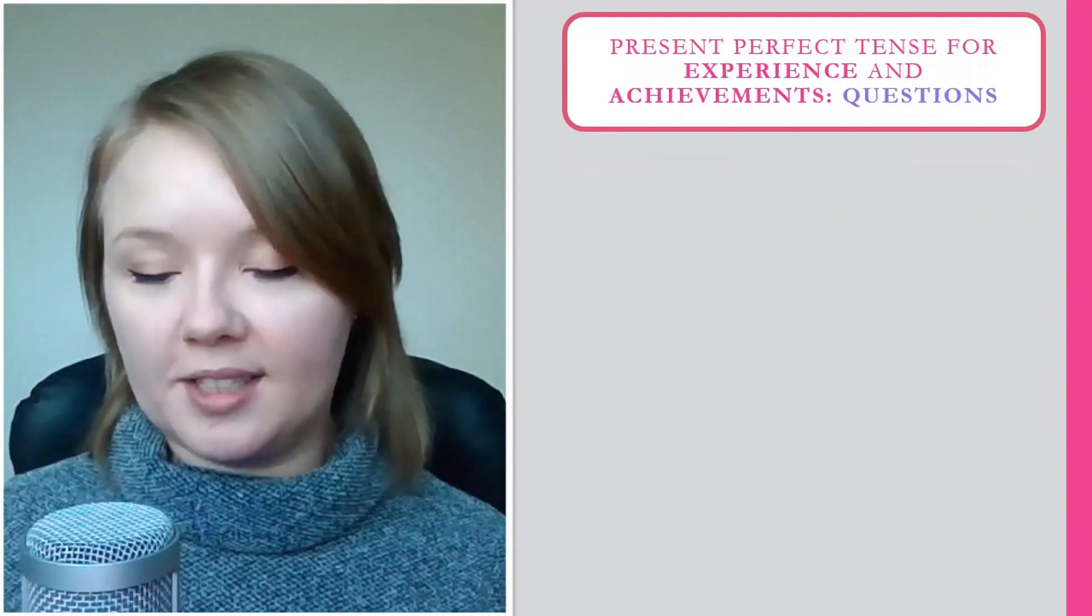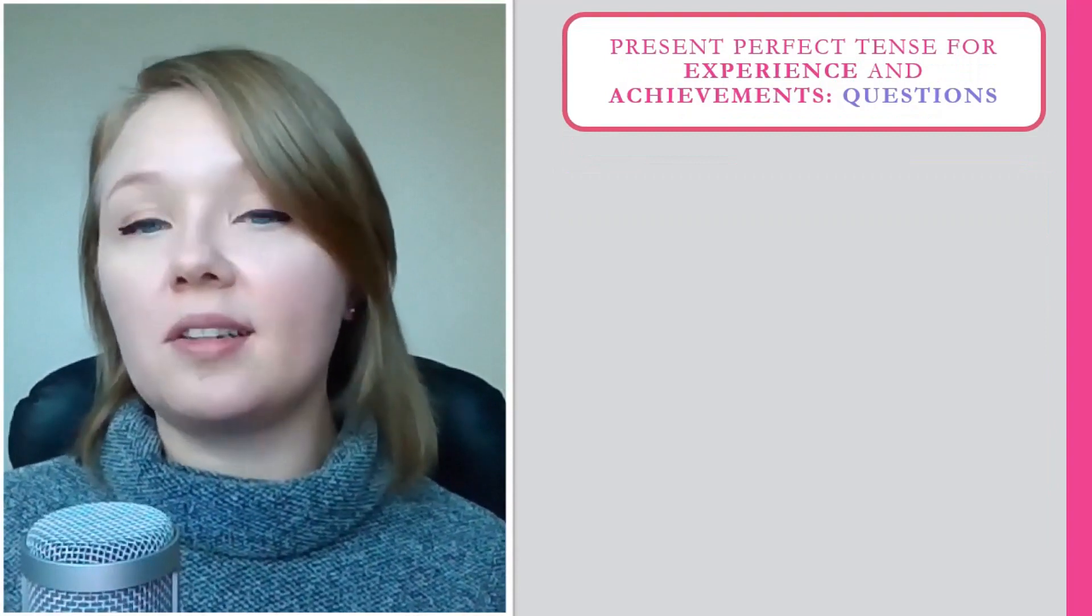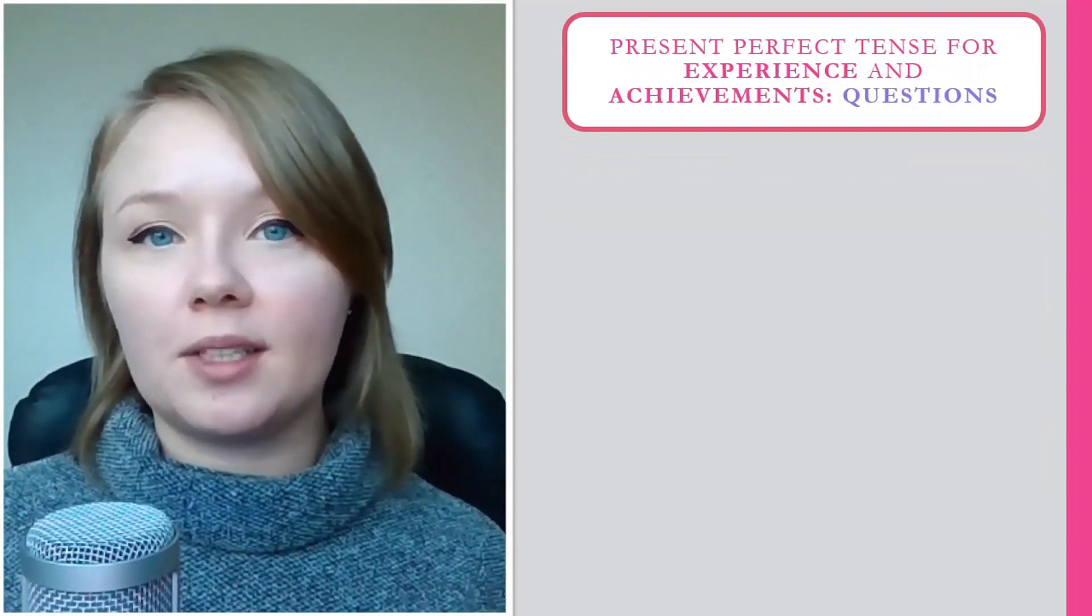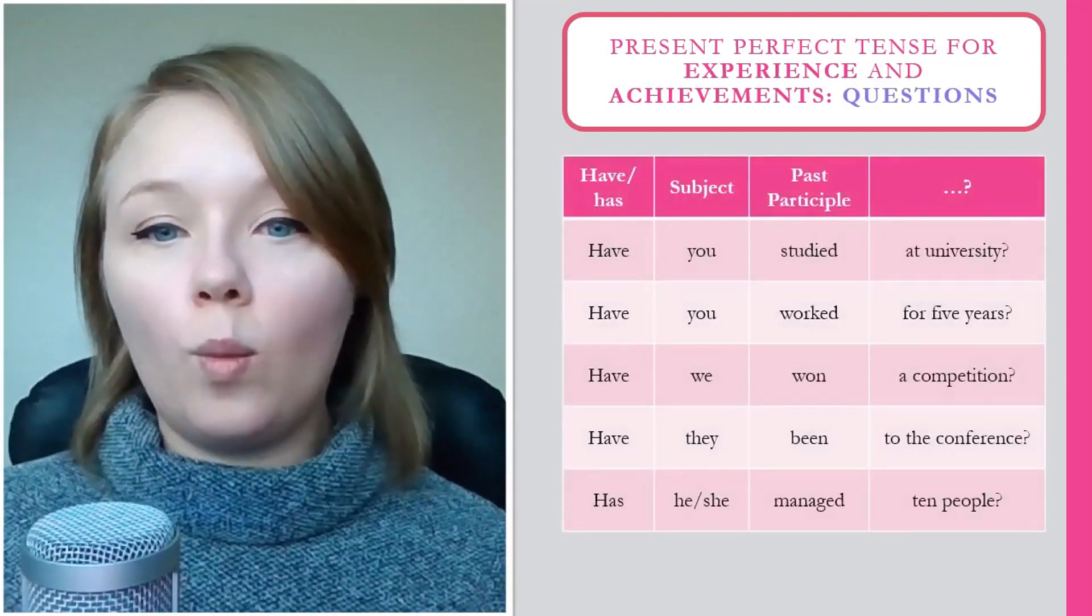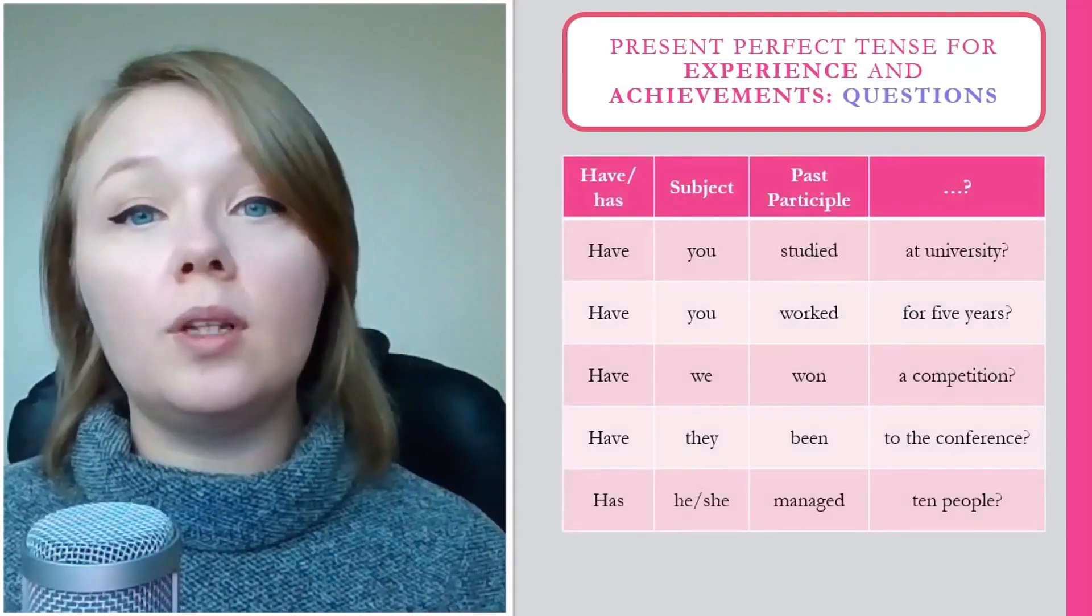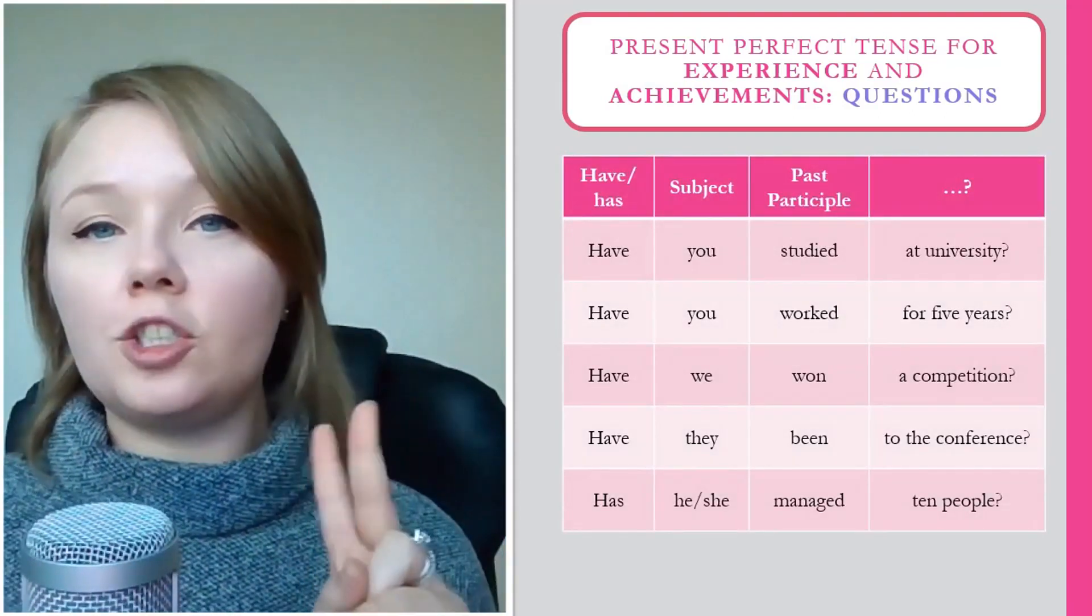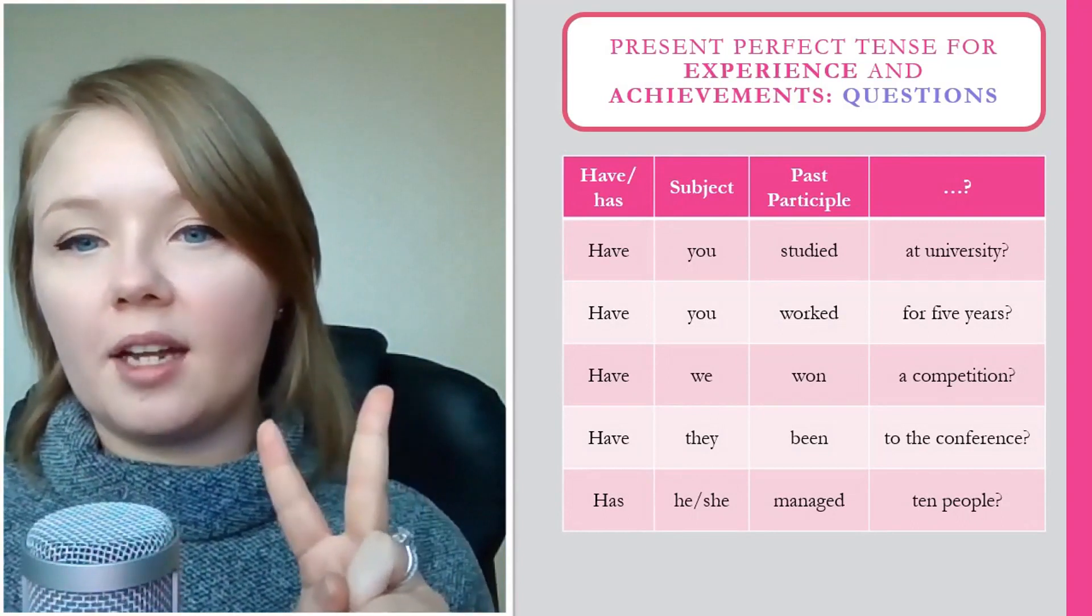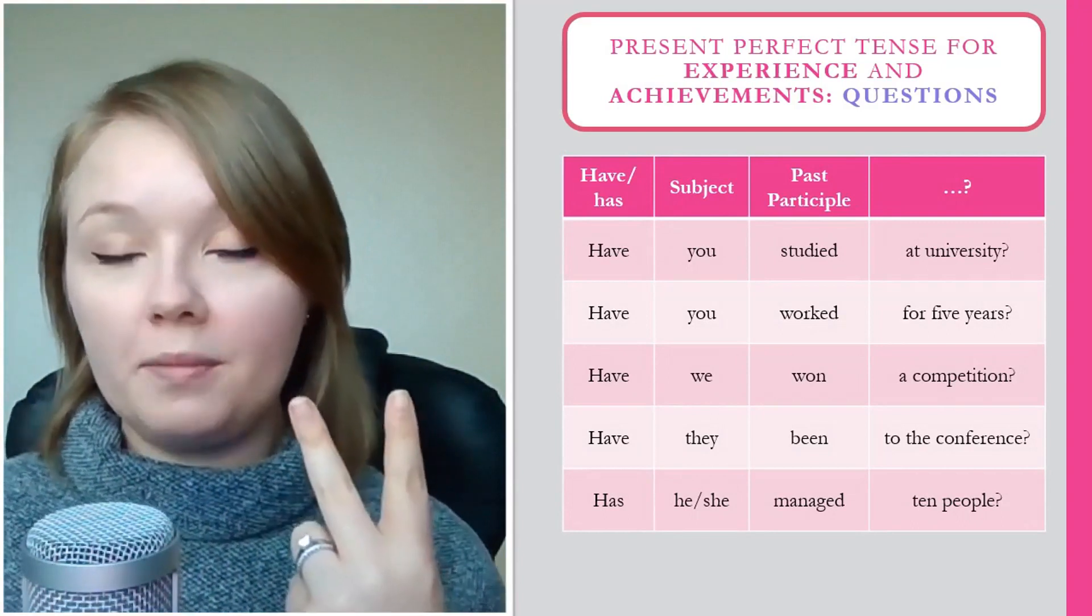How would we ask a question using present perfect tense, particularly about experience and achievements? Well, all we have to do, like at many points in English, is take our subject and the first verb and switch them around.